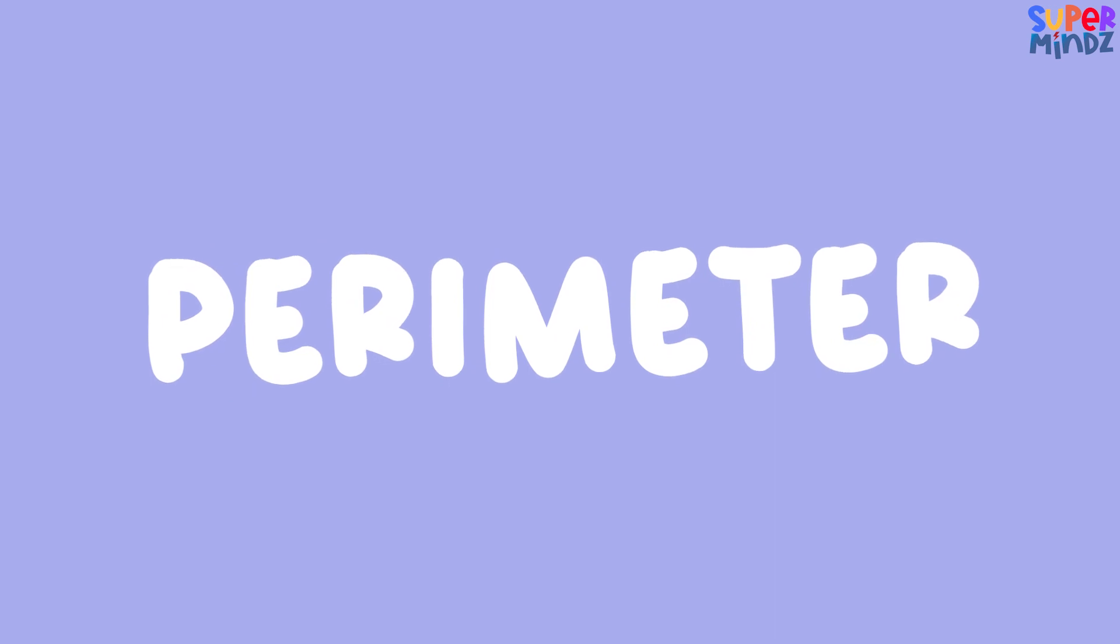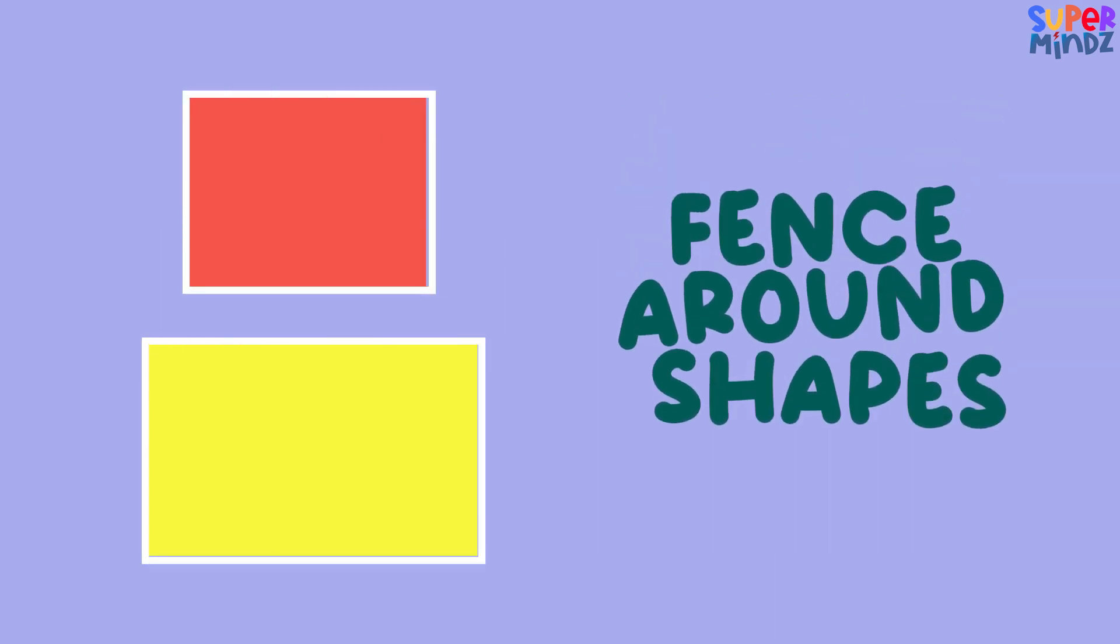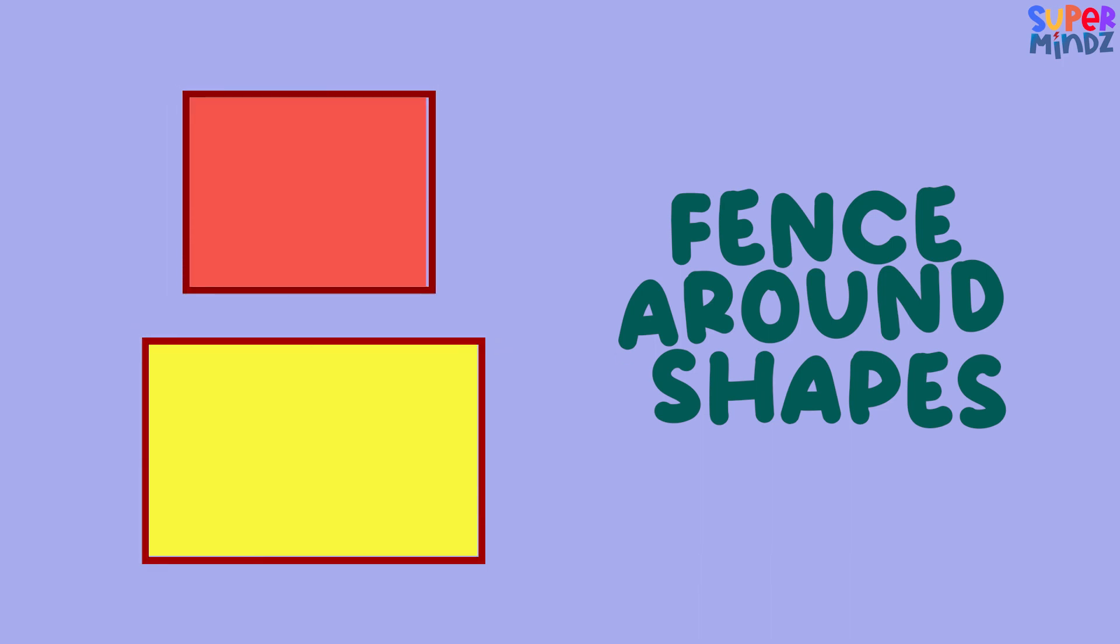talk about perimeter. It's like measuring the fence around the shape. For both the square and rectangle, we just add up all the sides. So for the square with each side measuring five feet, what's the perimeter?